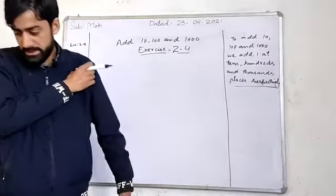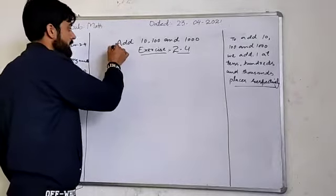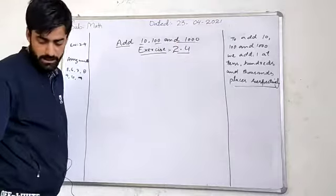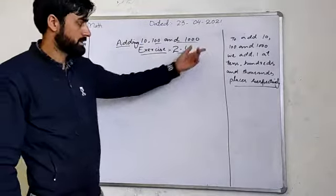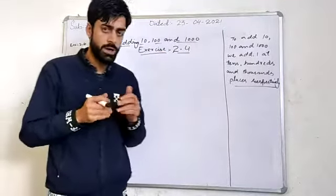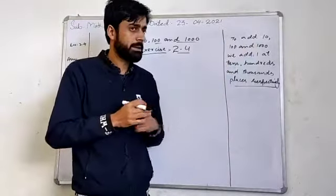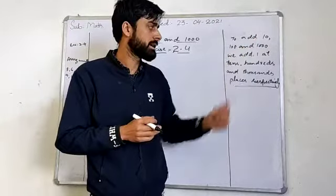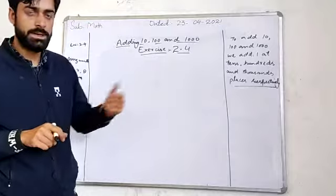Salam allek. I am learning about adding 10, 100, and 1000. We will address what is happening at the 1, 10, 100, and 1000 place respectively.